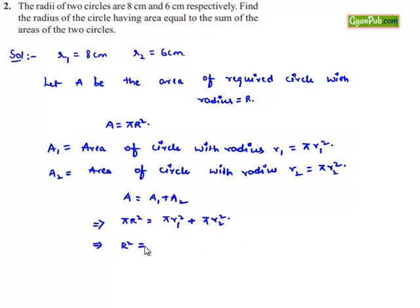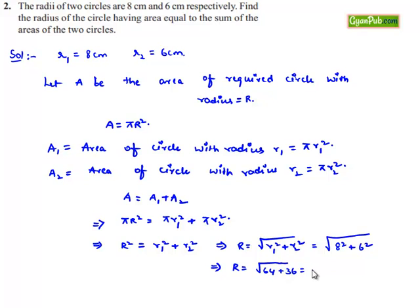We get R² equals R1² plus R2², that is R equals square root of R1² plus R2², which is square root of 8² plus 6². 8² is 64, 6² is 36, that is equal to square root of 100, which is 10.